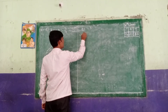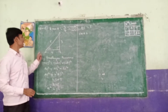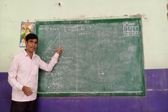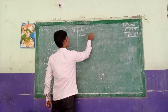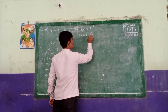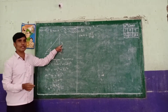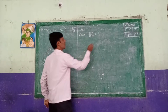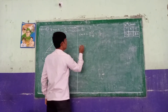Now, one by one we have to find each ratio. Sin A equals opposite side by hypotenuse. Opposite side equals 3, hypotenuse equals 5. So sin A equals 3 by 5.